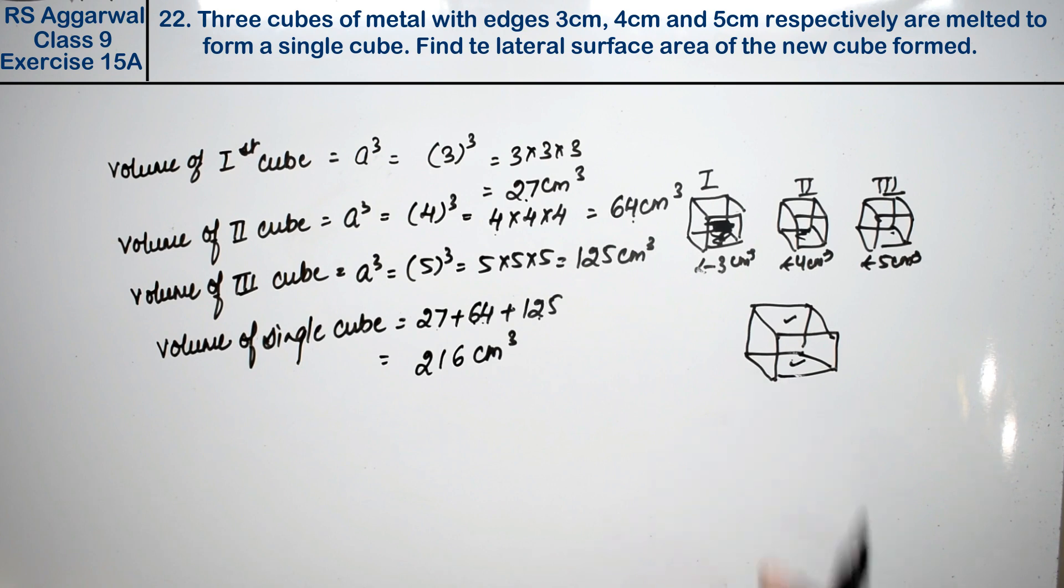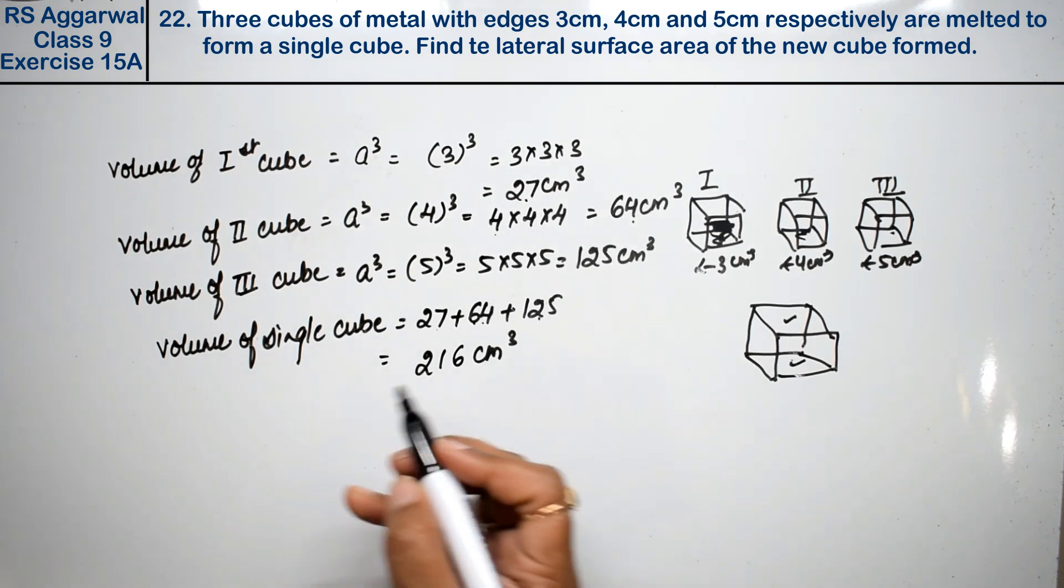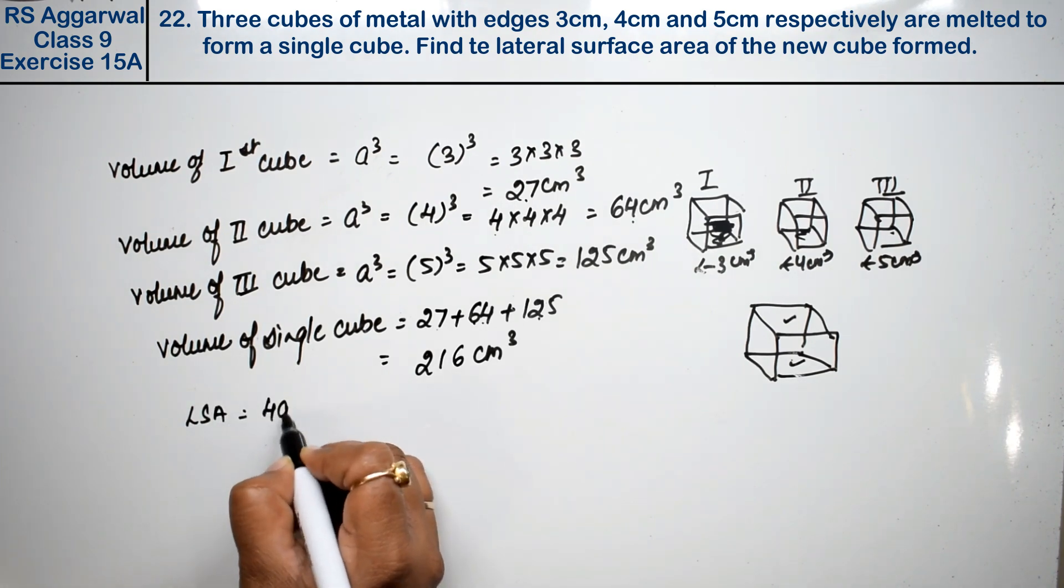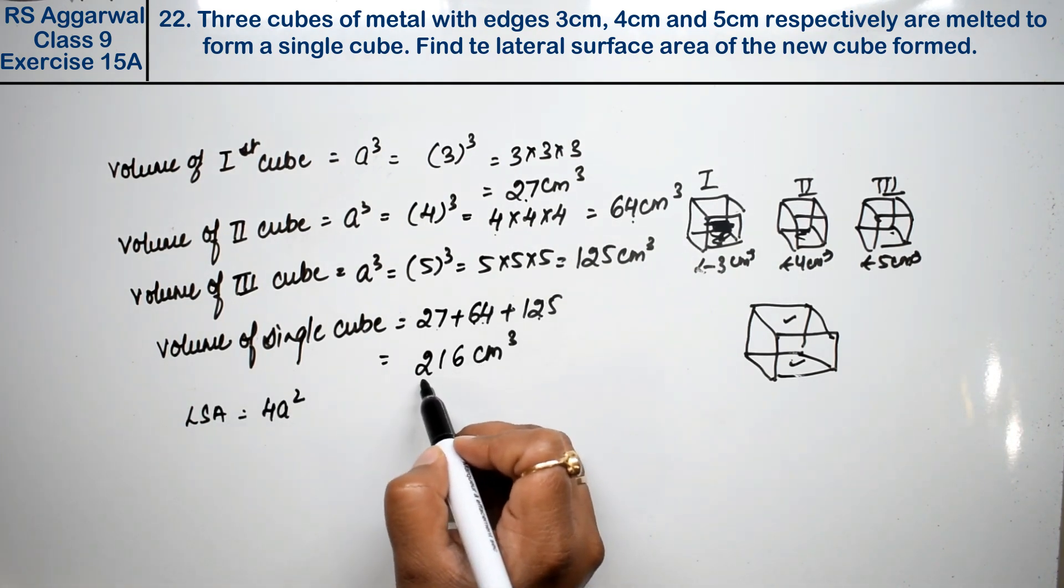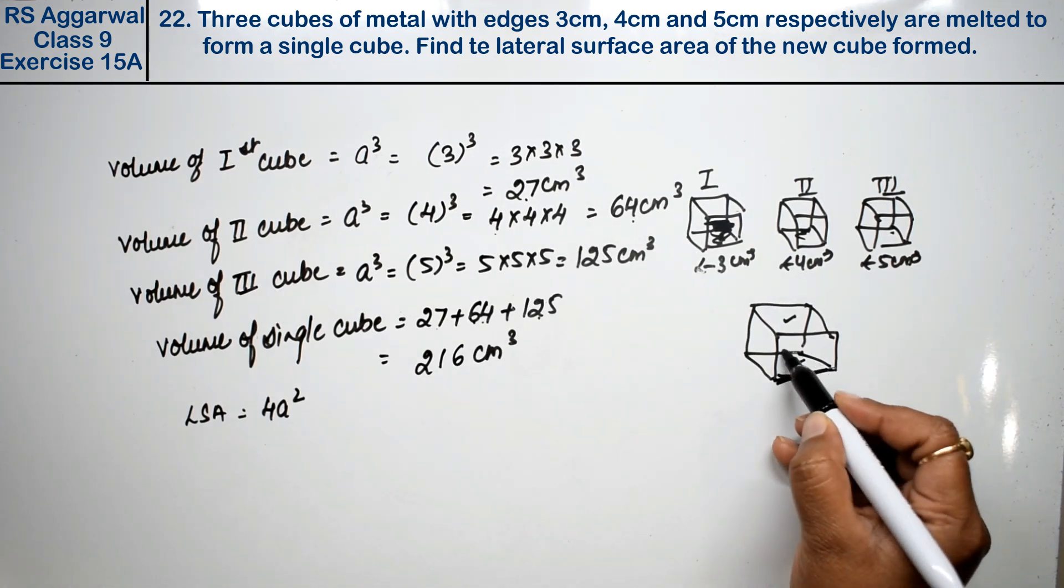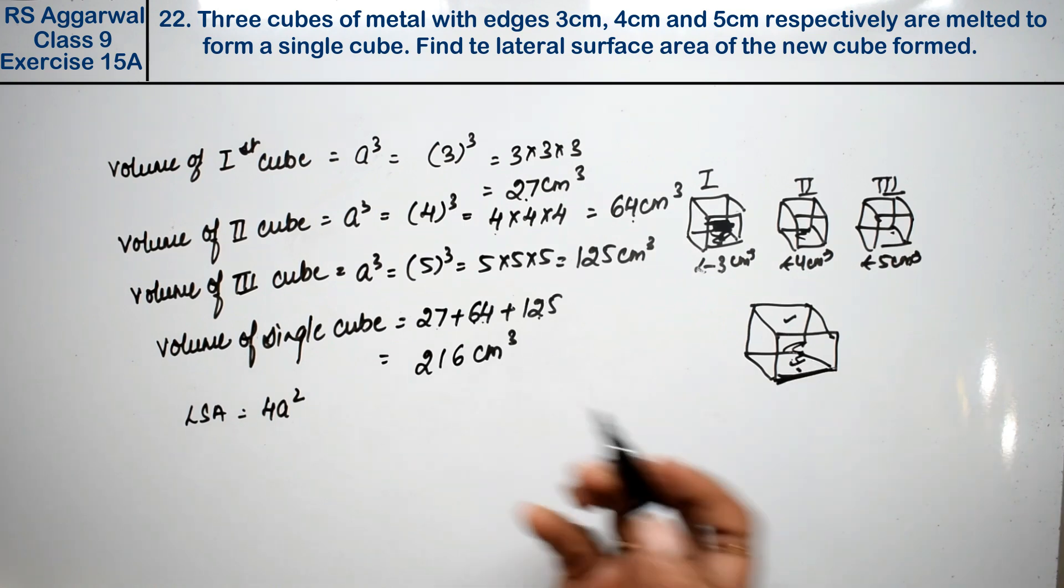Now we need to find the lateral surface area. The formula is 4a square. Now we need the edge of the new cube. Edge we don't know, volume we know. So we need to find the edge.